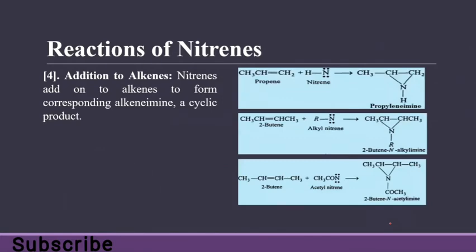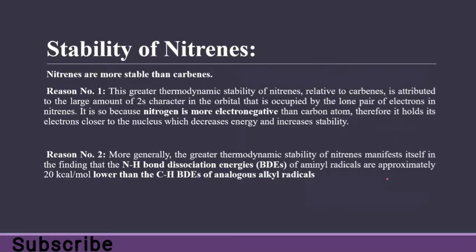Addition to alkenes: nitrines add onto alkenes to form corresponding alkylamines, a cyclic product. Nitrines can easily insert into the double bond. In pi insertion, one carbon forms a single bond and the other forms a single bond by breakage of the double bond. Examples include addition to isobutene, and alkyl nitrate and acetyl nitrate are examples of addition to alkenes.